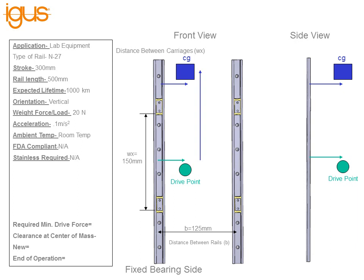Here is a typical Dryland N application. In this instance the rails are vertically orientated. The expected lifetime provided by the customer is 1000 kilometers. The rail length and stroke length have all been provided. In this case we have two rails and on each rail we have two bearings. We want to mark the zero point, which is between the two bearings on the fixed bearing side — which you can see is on the left rail — and we'll also mark it on the side view.